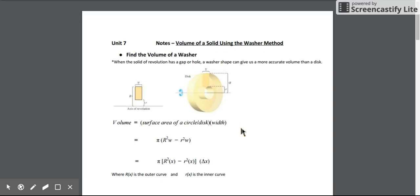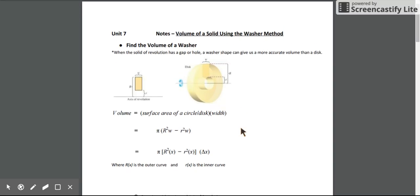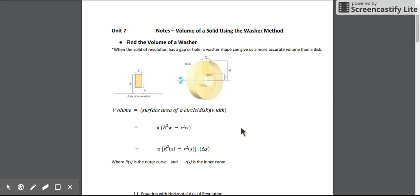So we'll see an example of that when we get to our example, but first let's try and figure out how we can find the volume of a washer shape, or if a washer doesn't make sense to you, you can think about it as a doughnut. It is a shape with a hole cut out of it.